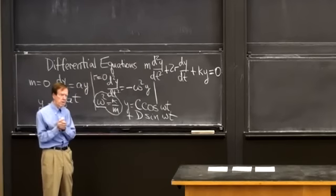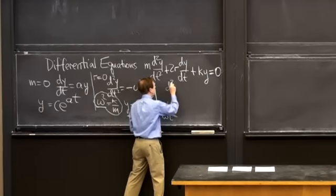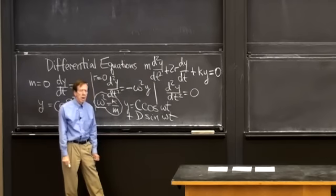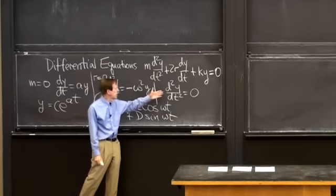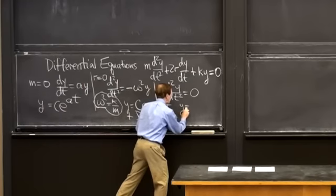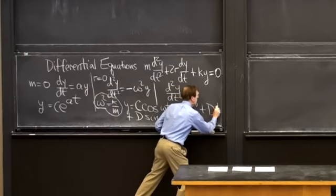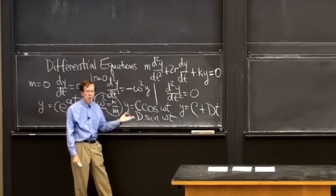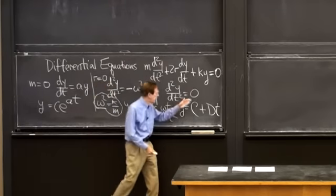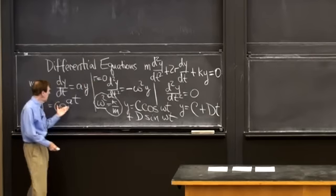A third very special case: suppose d²y/dt² = 0. What functions have second derivative equal to zero? A constant function does — even its first derivative is zero. And t does — its first derivative is 1, and then the second derivative is 0. So the first two powers of t, t⁰ and t¹, show up as solutions in that very special case.